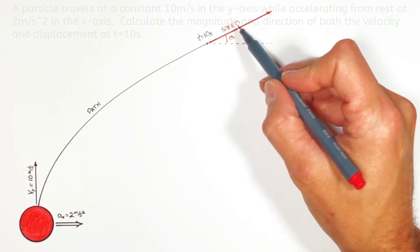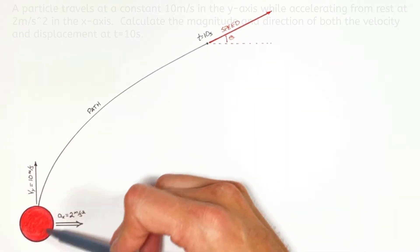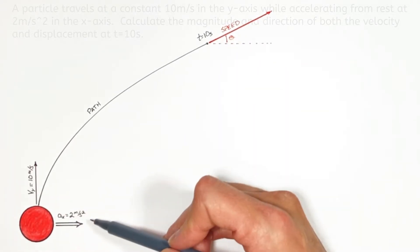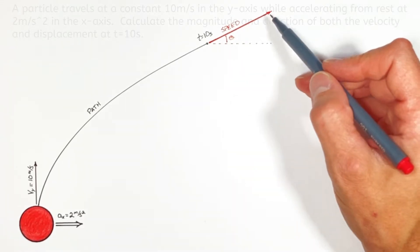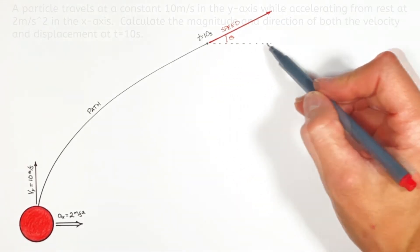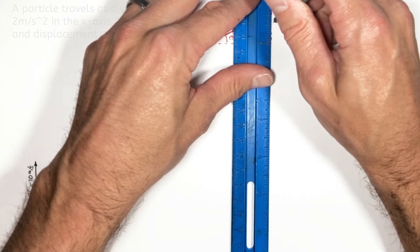So to solve for the speed the first thing we need to do is look at the motion of the ball in both the y and x-axis. You see the speed is the result of both horizontal motion of the ball as well as the vertical motion of the ball.